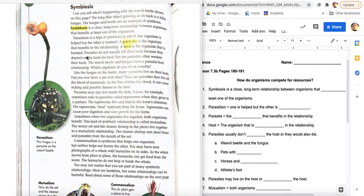Parasites don't usually kill their hosts. Number five. Because they depend on the hosts for food. But the parasites often weaken their hosts. The weevil, beetle, and fungus have a parasite-host relationship. Which organism do you think benefits?